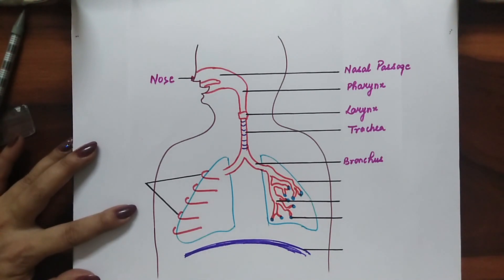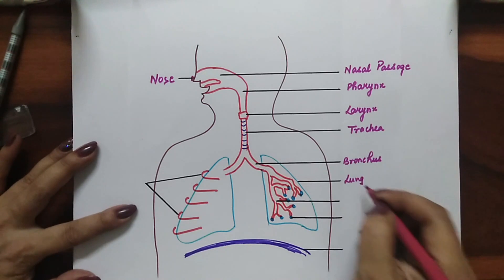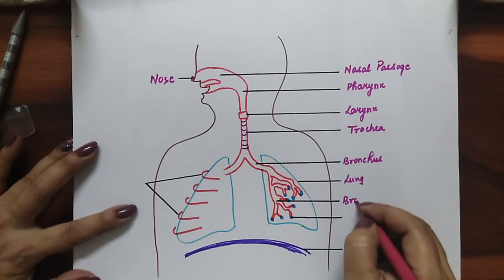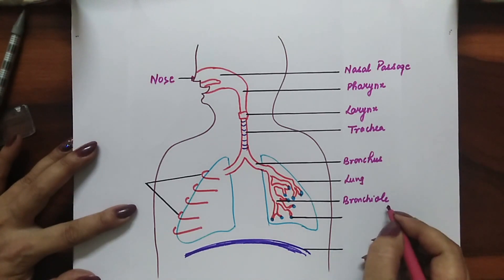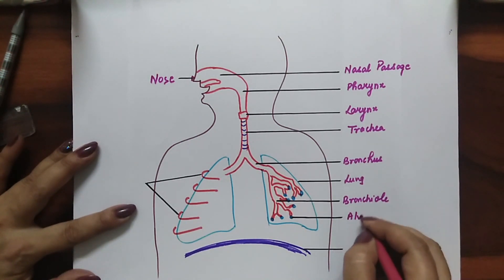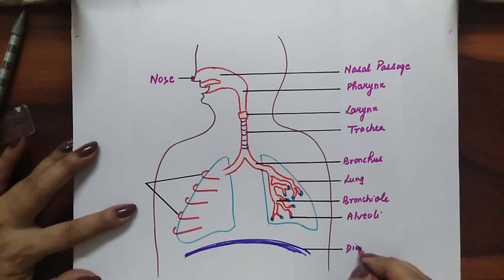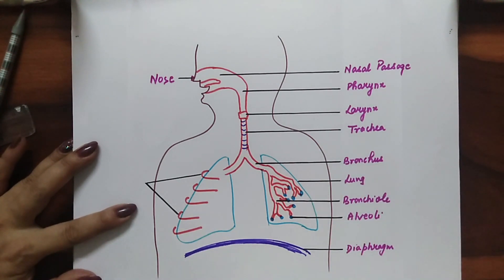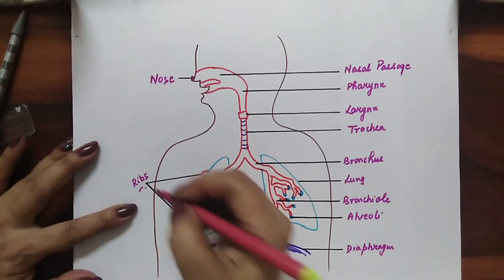Bronchus — singular is bronchus, plural is bronchi. Lung. Bronchioles — plural will be bronchioles, singular is bronchiole. And alveoli, that is the air sacs. Diaphragm and ribs.